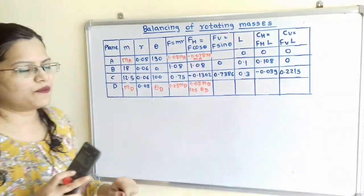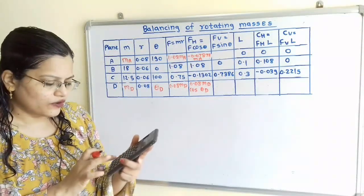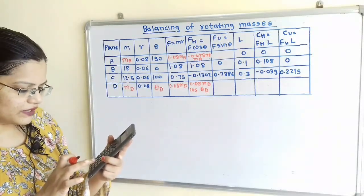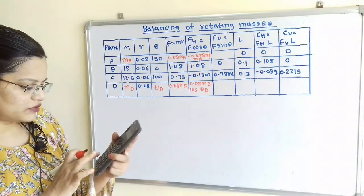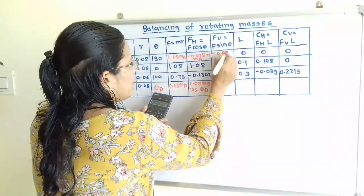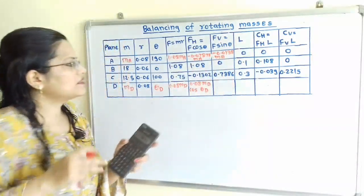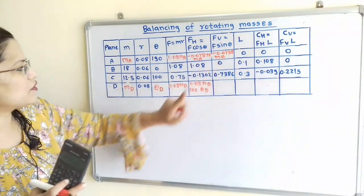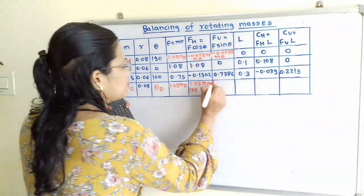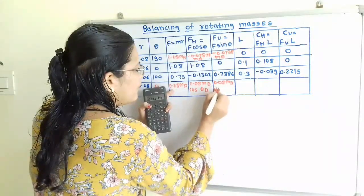For the vertical component F·sinθ: for A it is 0.08·MA × sin(190°) = −0.1736 × 0.08 = −0.0138·MA. For B: sin(0°) = 0. For C: 0.7386. For D, since theta D is unknown, the vertical component is 0.08·MD·sin(θD).